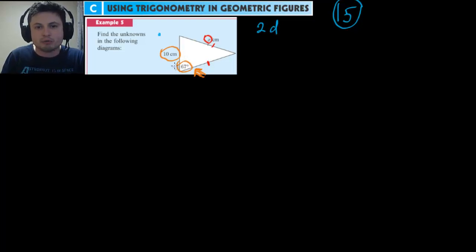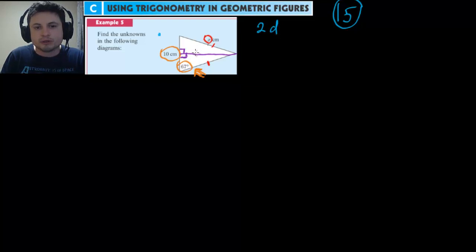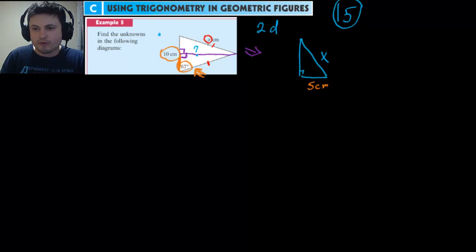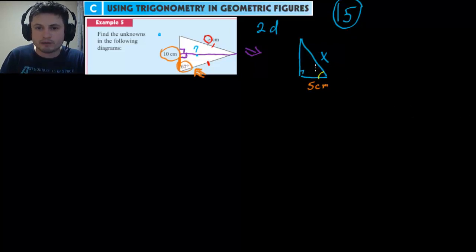To solve this, we need to turn the isosceles triangle into a right triangle. If you draw a line down the middle of an isosceles triangle, it divides into two right triangles. Looking at one of those right triangles, it has side X that we're looking for, and the bottom part is half of the full base — so it's only 5 centimeters. We also have the angle, which is 67 degrees.